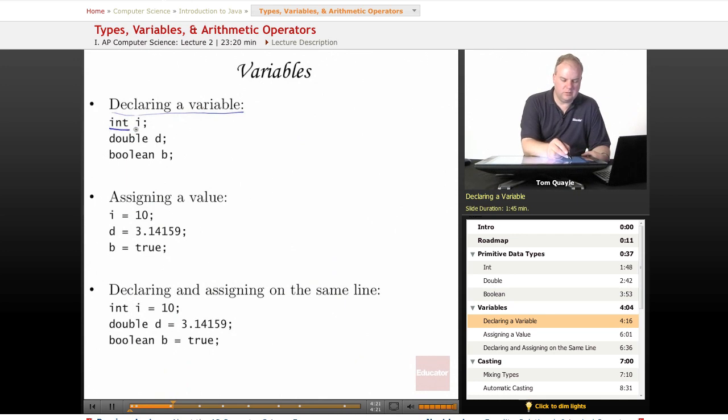So we declare a variable by first giving the type of the variable and then assigning it a name and then a semicolon. Every statement in a Java program must end with a semicolon. That tells Java that you're done with that statement and what comes next is part of the next statement in your program.